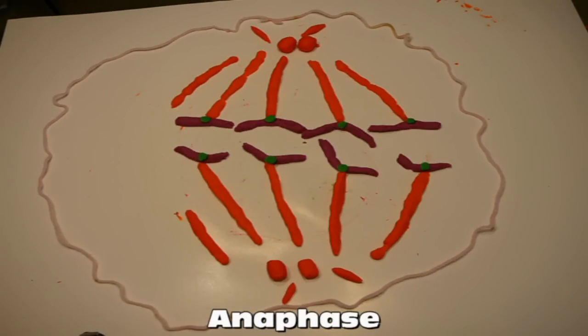During anaphase, the centromeres move apart, separating the sister chromatids into daughter chromosomes. Proteins in the kinetochores, which are powered by ATP, move the chromosomes centromere first towards opposite poles of the cell. The poles move farther apart, thus elongating the cell.